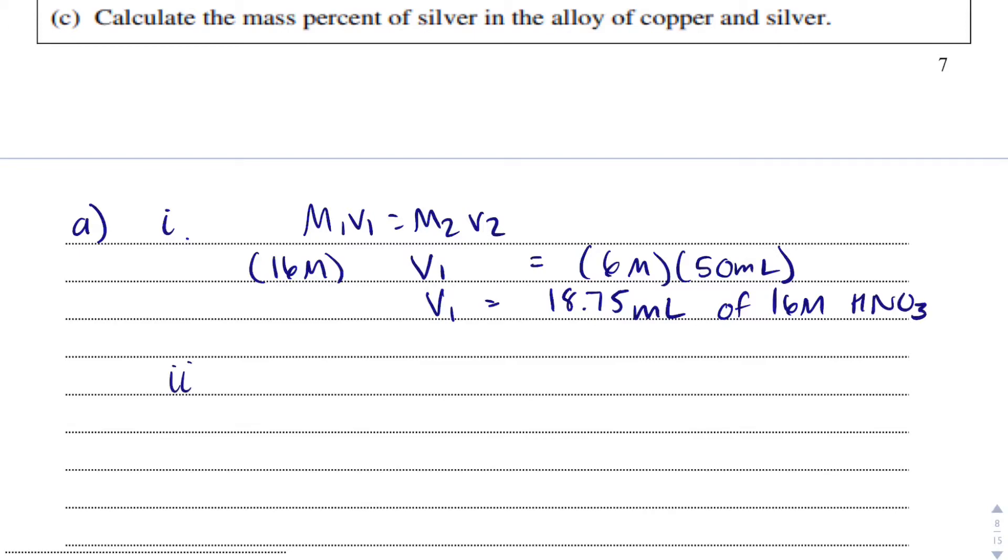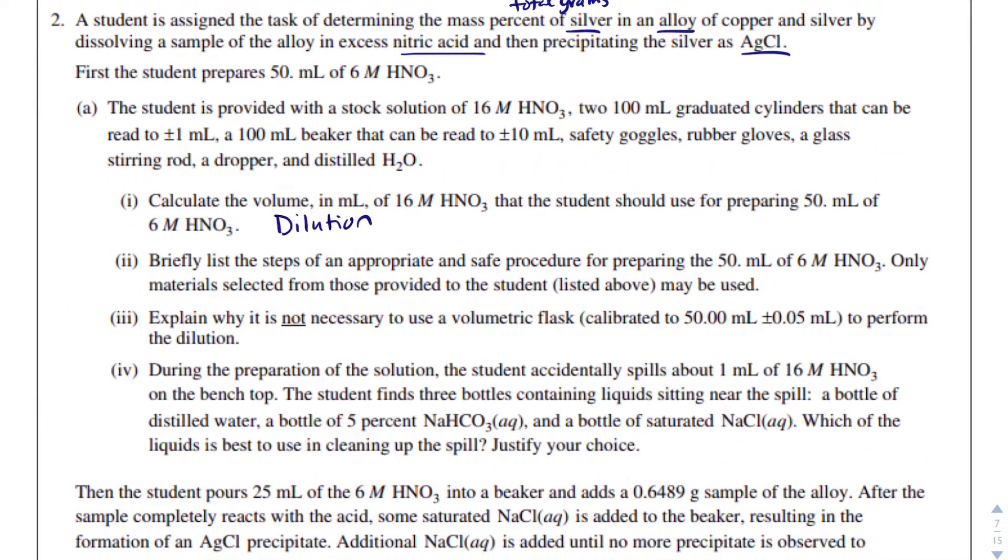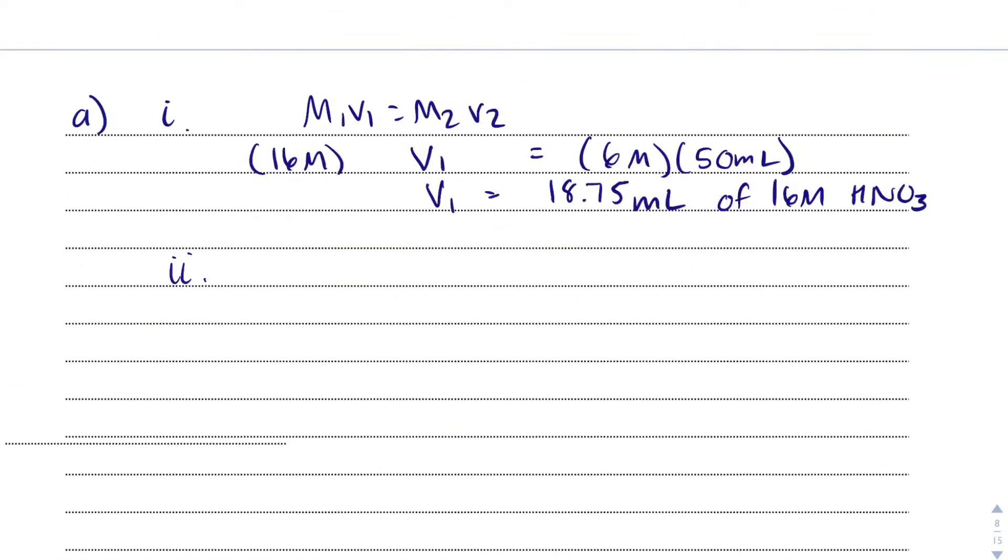In part 2, it says briefly list the steps of an appropriate and safe procedure for preparing 50 milliliters of 6 molar HNO3. Only materials selected from those provided to the student may be used. I'm going to number them like a recipe. We want to put on goggles and rubber gloves. You could also say apply PPE, which is personal protective equipment. But because they specifically mentioned they want us only to use the things that they provided, I just wrote it out.